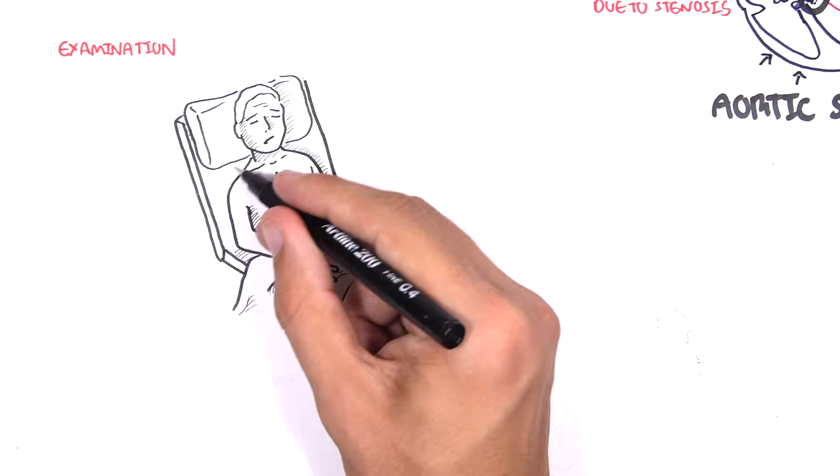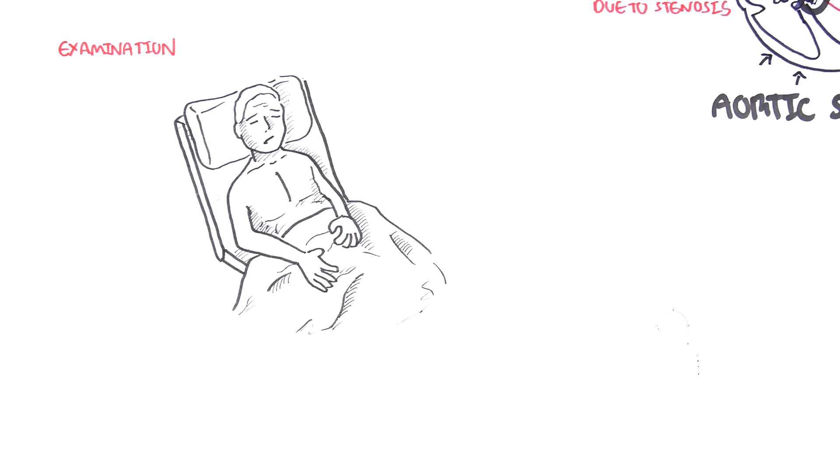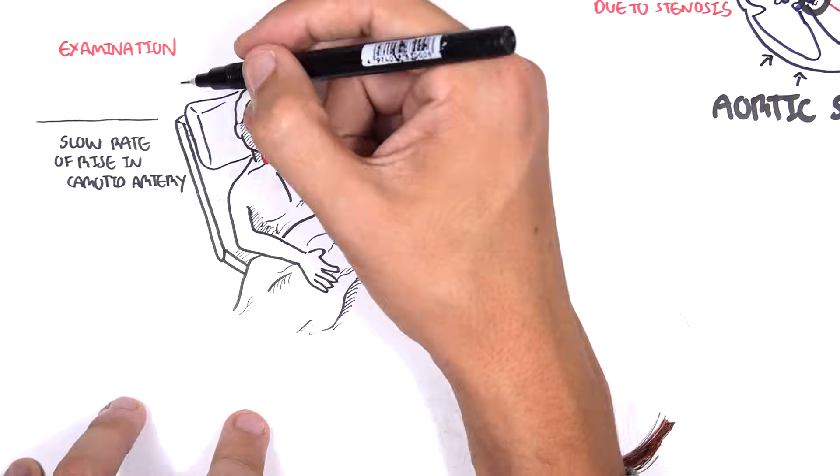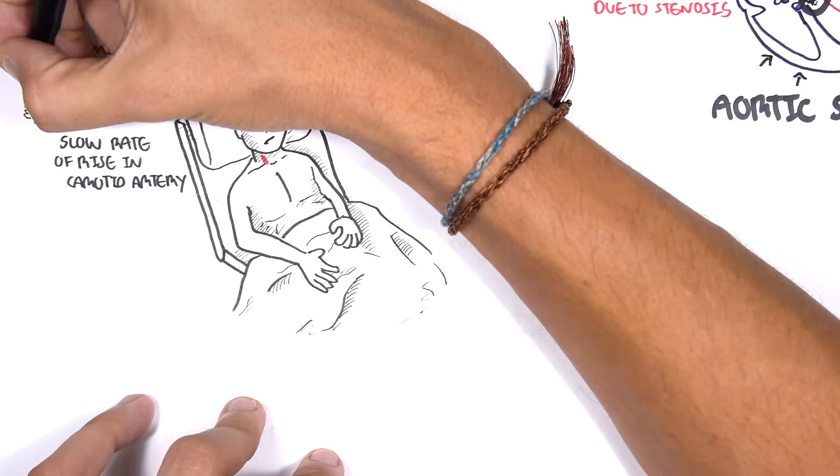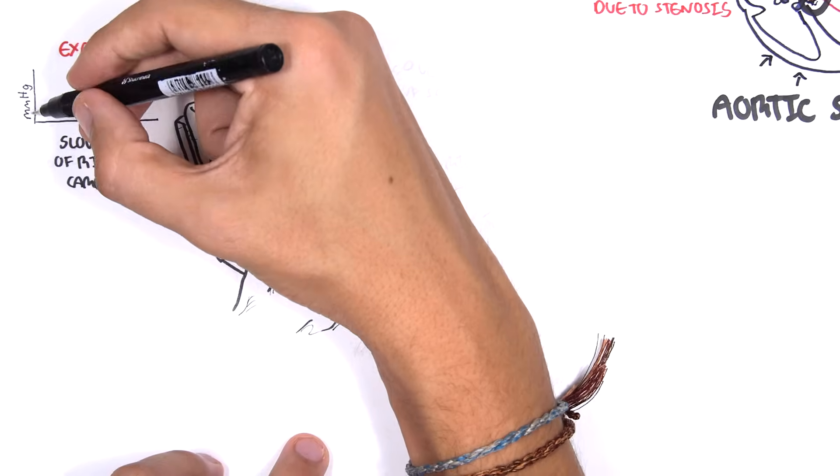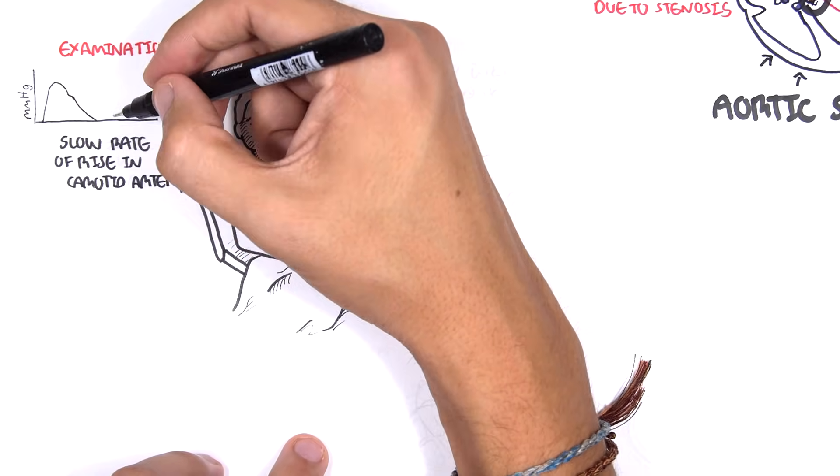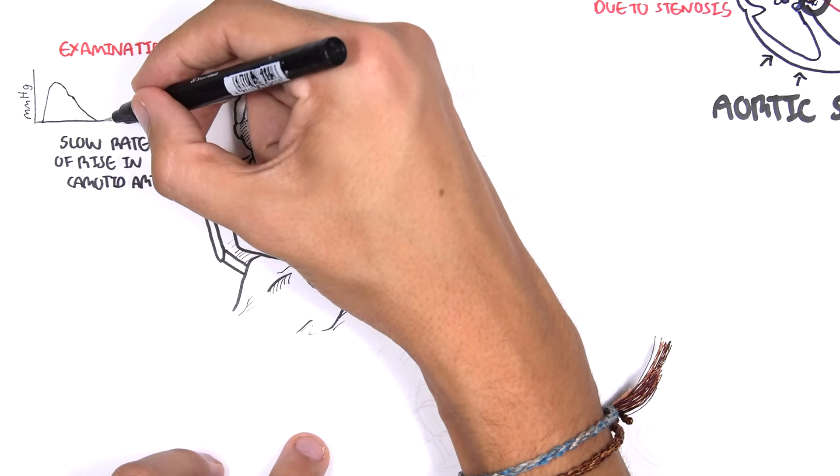On examination, we can feel a slow rate of rise of the carotid arteries, which can be felt around the neck. Normally, the carotid pulse rises fast. But in aortic stenosis, the carotid pulse is slow and weak.